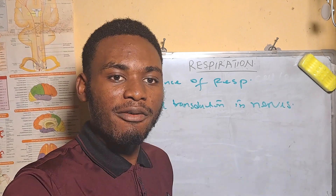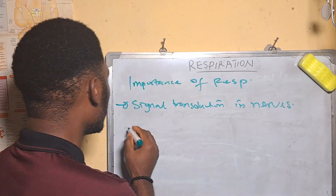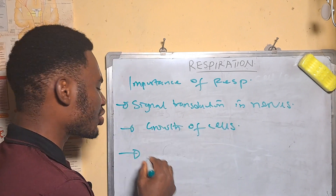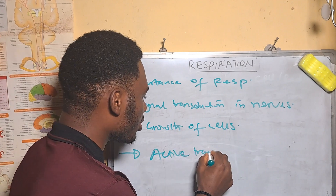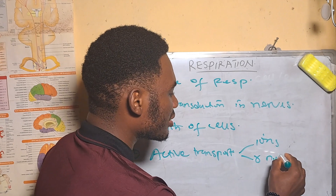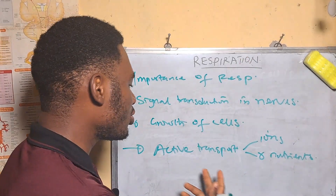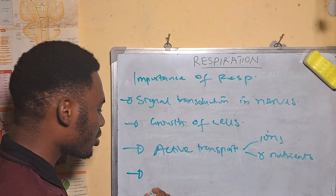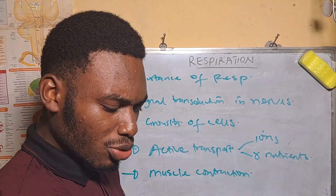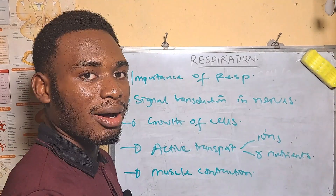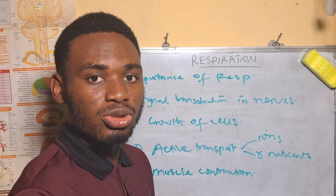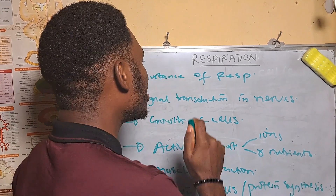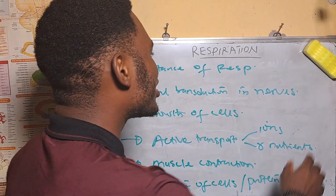The importance of respiration with respect to ATP includes: helping in signal transduction in nerves — ATP helps the nervous system transfer signals along nerve fibers. ATP also helps in the growth of cells. The energy from respiration helps in active transport in the body — transport of ions or nutrients. It is also used for muscle contraction, allowing movement. Additionally, this energy is used for the repair of body cells, that is, in protein synthesis.